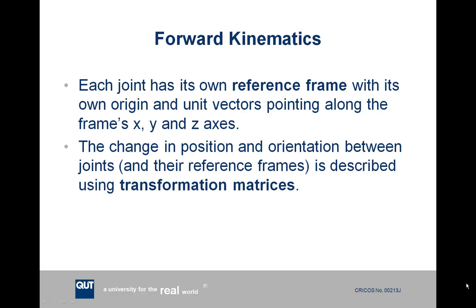What we're going to get into in this lecture is forward kinematics. Each joint in a robot has its own reference frame — its own set of x, y, and z axes pointing in a certain orientation. These axes have their own origin at the joint, and this is our standard convention. When we look at how the orientation of these reference frames varies from one joint to the next, we use matrices called transformation matrices, which help us make translations and rotations in space.